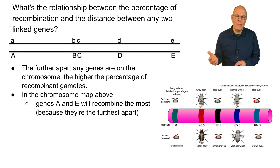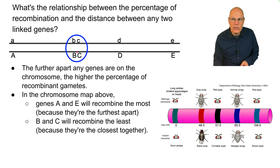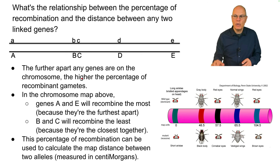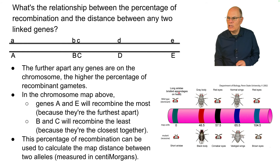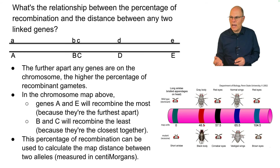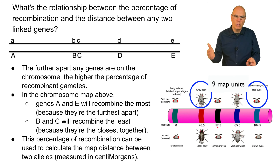But genes B and C will recombine the least because crossing over can only occur if there's a chiasma at that specific spot to enable the alleles to swap. The percentage of recombination can be used to calculate map distance between two alleles. On a chromosome map, the distance between long aristea and gray body is 48.5 units, and between gray body and red eyes it's about 9 recombination units — reflecting the frequency of recombinants.